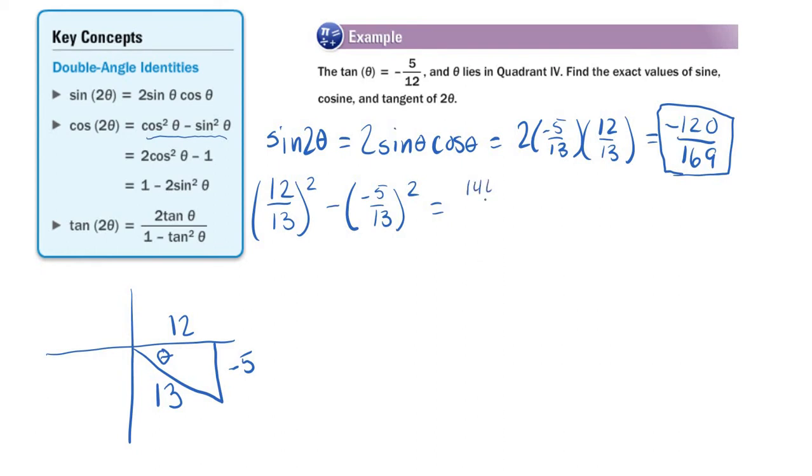we're going to get 144 over 169 minus, now negative 5 squared, of course, is positive. So minus 25 over 169. Of course, we can just plug that in our calculator if we need to. And we get 119 over 169. So the cosine of 2 theta is 119 over 169.